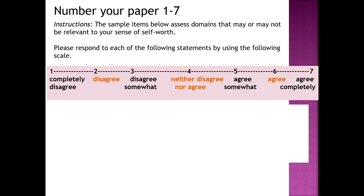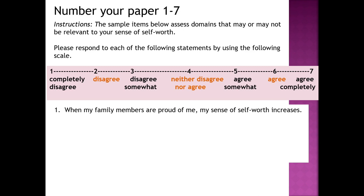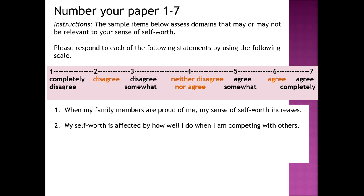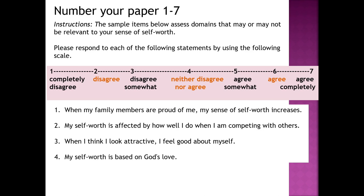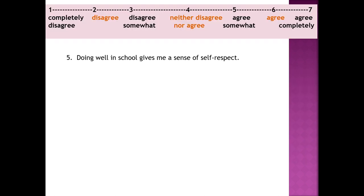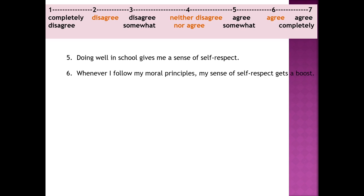Number one: when my family members are proud of me, my sense of self-worth increases. Two: my self-worth is affected by how well I do when I am competing with others. Three: when I think I look attractive, I feel good about myself. Four: my self-worth is based on God's love. Five: doing well in school gives me a sense of self-respect. Six: whenever I follow my moral principles, my sense of self-respect gets a boost. Seven: my self-esteem depends on the opinions others hold of me.